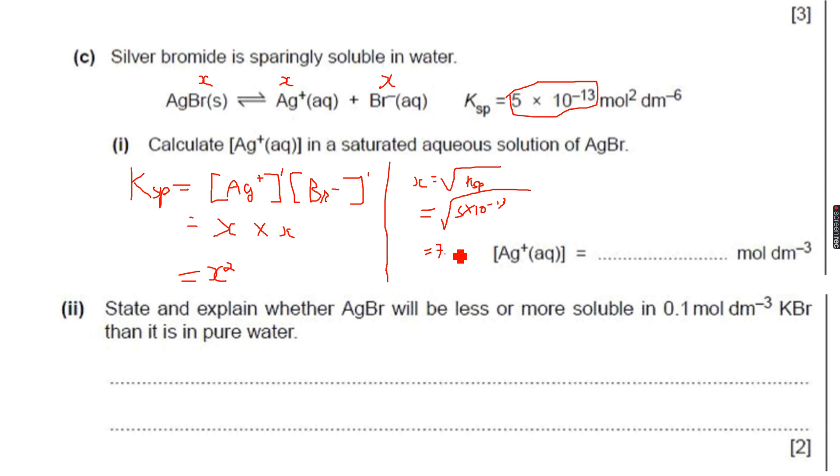Which gives me, when I use my calculator, 7.07 to 3 significant figures into 10 to the power of minus 7. So 7.07 into 10 to the power of minus 7 mole per dm cube. So this is the concentration of Ag plus is X, and we have calculated X. So this is 7.07 into 10 to the power of minus 7 mole per dm cube. This is the concentration of Ag plus ions in solution.